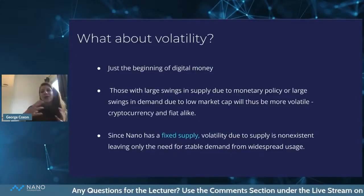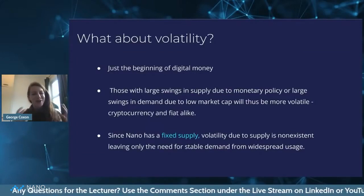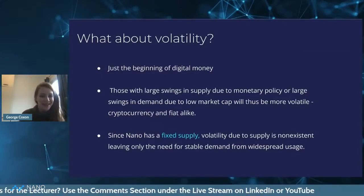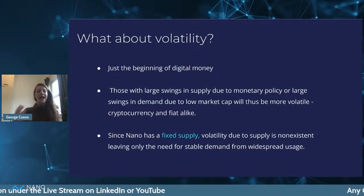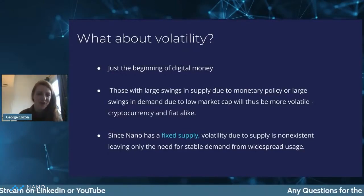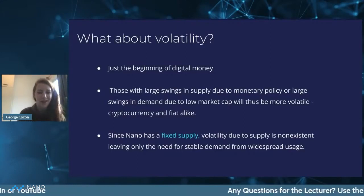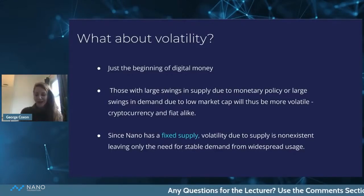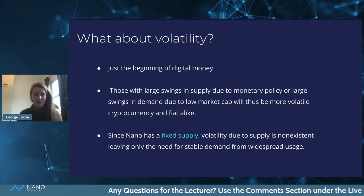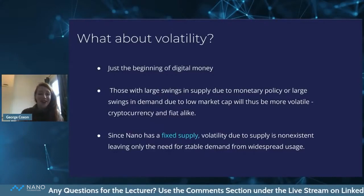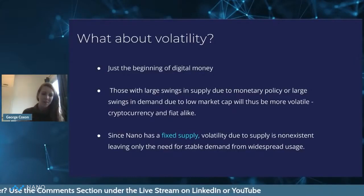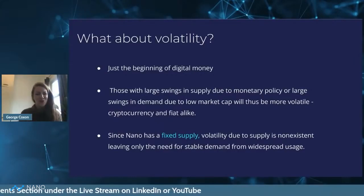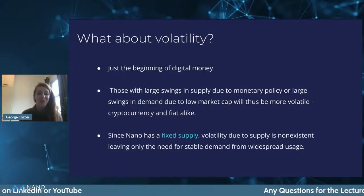A big question when it comes to perfect money is: what about volatility? This is the hottest topic when it comes to cryptocurrencies, and how cryptocurrencies could move forward to really empower global economic freedom. This is just the beginning of digital money — we are in the embryonic stages of this new world and what we can do with technology in global financial markets.